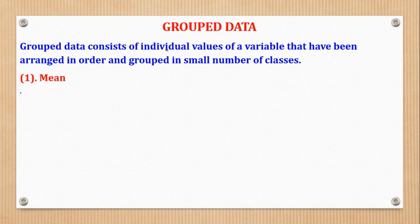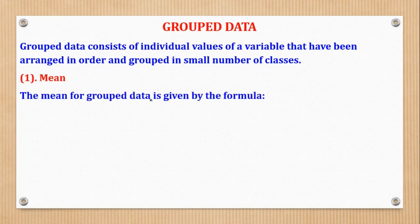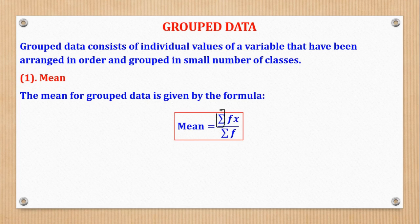We shall start with the formula for mean. Mean for grouped data is given by the formula: mean equals summation of fx over summation of f, where summation means adding. This f is for frequency and x is for mid mark or class mark. You first multiply frequency with mid mark, then sum everything, and after that divide by the total of the frequency.